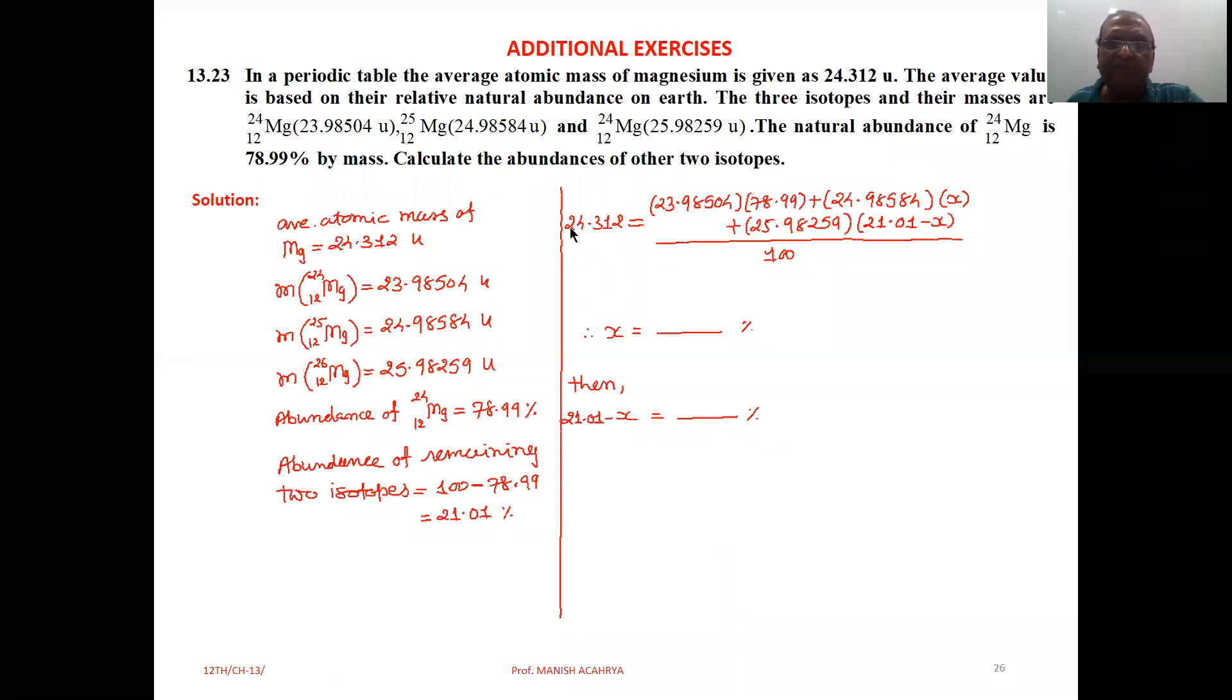now we can write 24.312 equals, for 12mg24 the mass is 23.98504 and it is 78.99% so times 78.99% then suppose 12mg25 whose mass is 24.98584 is x percentage, then we can write plus 25.98259 for 12mg26 that will be 21.01 minus x.